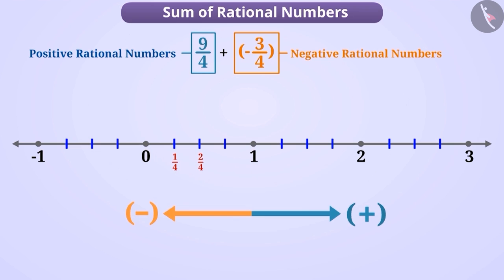Now we can mark 1 by 4, 2 by 4, 3 by 4 to the right of 0 as positive rational numbers. Similarly, to the left of 0, we can write rational numbers minus 1 by 4, minus 2 by 4, minus 3 by 4.